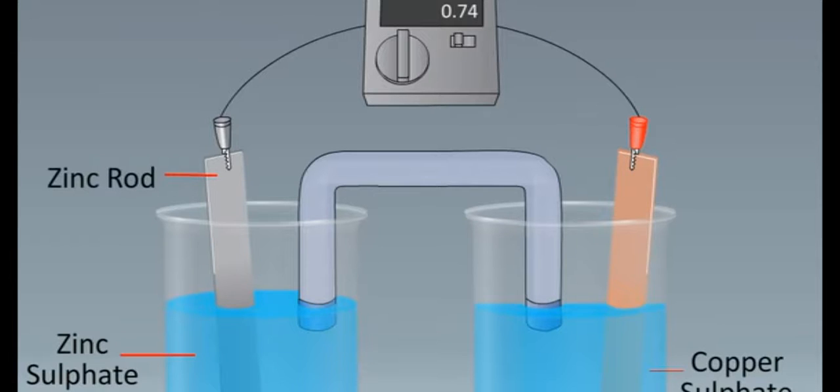A zinc rod is dipped into ZnSO4 solution, while the copper rod is dipped into CuSO4 solution. These metallic rods are known as electrodes.